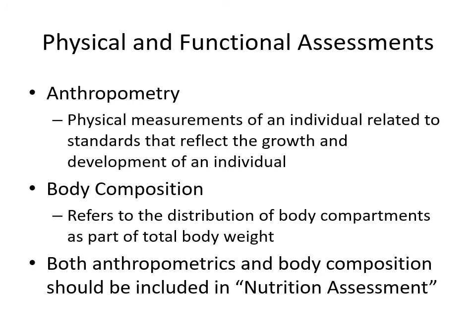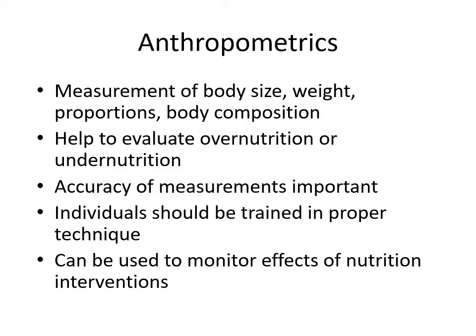Now let's look at physical and functional assessments. Anthropometry refers to physical measurements of an individual related to standards that reflect the growth and development of that individual. Body composition refers to the distribution of body compartments as a part of total body weight. In our nutrition assessment we want to include both anthropometrics and body composition whenever available. Our goal with anthropometrics is to establish and evaluate for over-nutrition or under-nutrition, and individuals need to be trained in proper technique to get accurate measurements. These can also be used to monitor the effects of nutrition interventions.